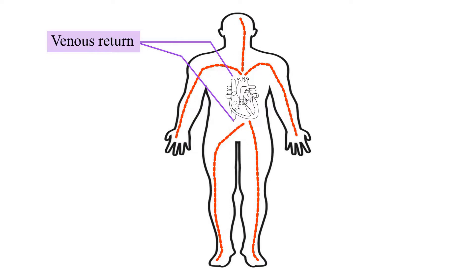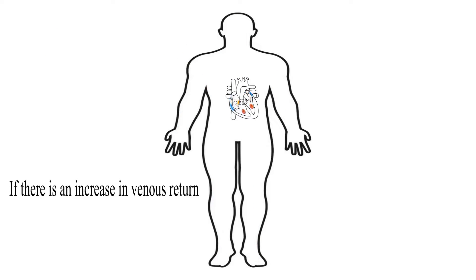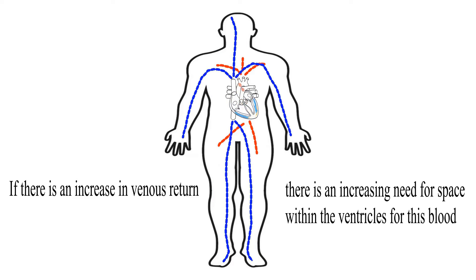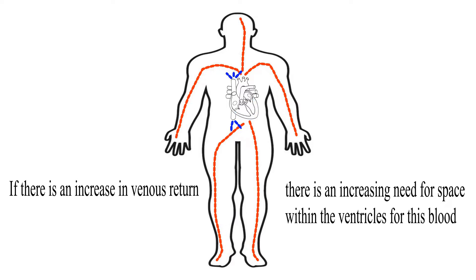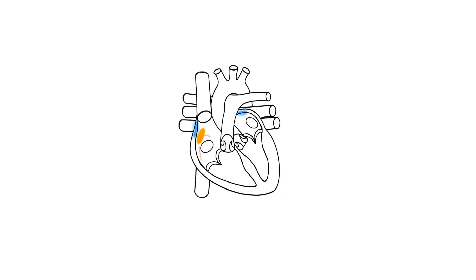However, if there is an increase in venous return, then there is an increasing need for space within the ventricles for this blood. As a result, the ventricles stretch to accommodate the increased volume of blood they are receiving.